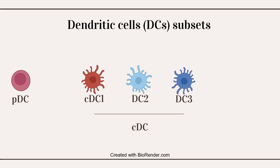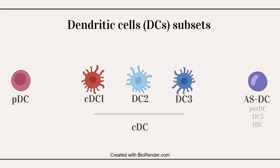DC3 exhibit multiple similarities with DC2, but they are understood to have a distinct ontogeny. Lastly, another member of the DC family is the Axl-positive Siglec-6-positive DCs, or ASDCs, also designated as PreDCs, DC5, or TDCs.